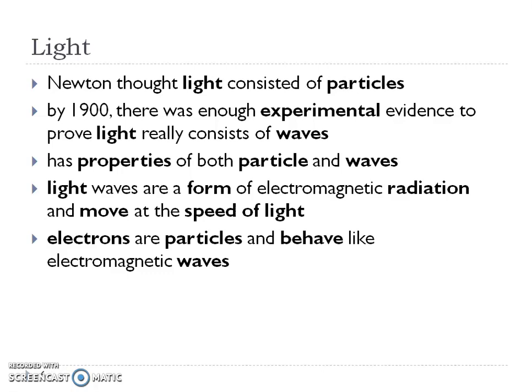Newton thought that light consisted of particles, but then in the 1900s there was enough evidence to say light really consists of waves. Light has properties of both particles and waves, and because of this, they form what's called electromagnetic radiation. We already know that light moves at the speed of light. Electrons also have properties of both particles and waves.